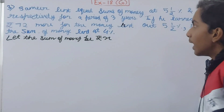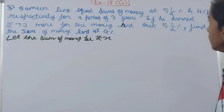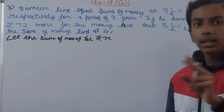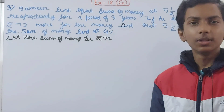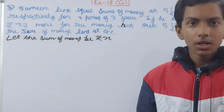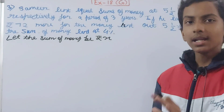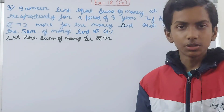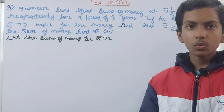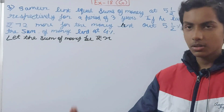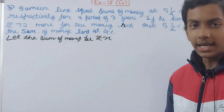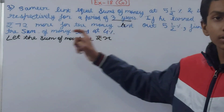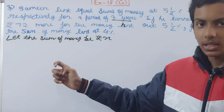Samir lent equal sums of money at two different rates. Suppose he has ₹1000 — he lent ₹1000 at 5½% and another ₹1000 at 4% separately. The time given is three years, and the time is the same for both sums.